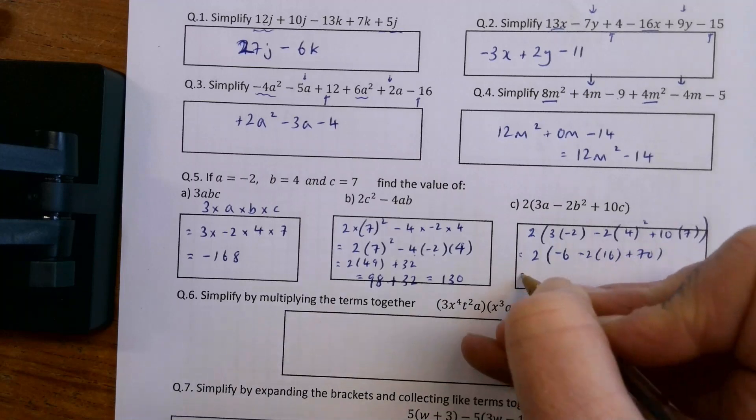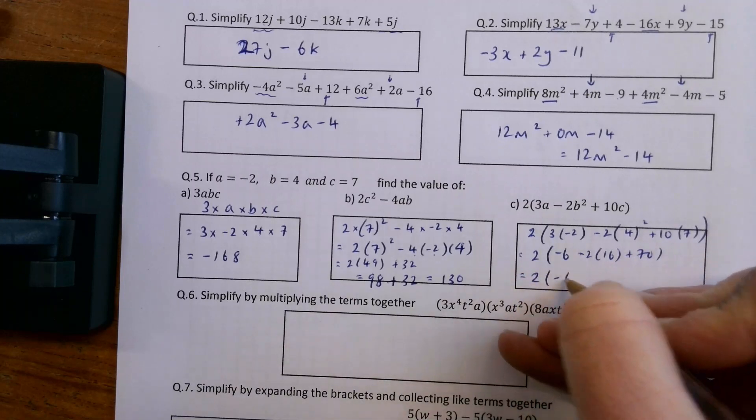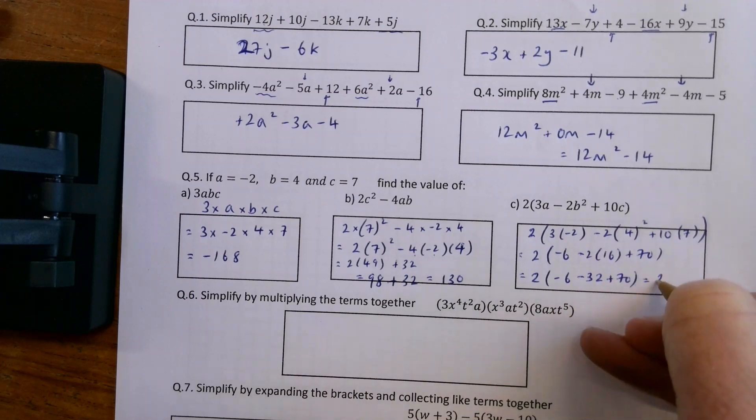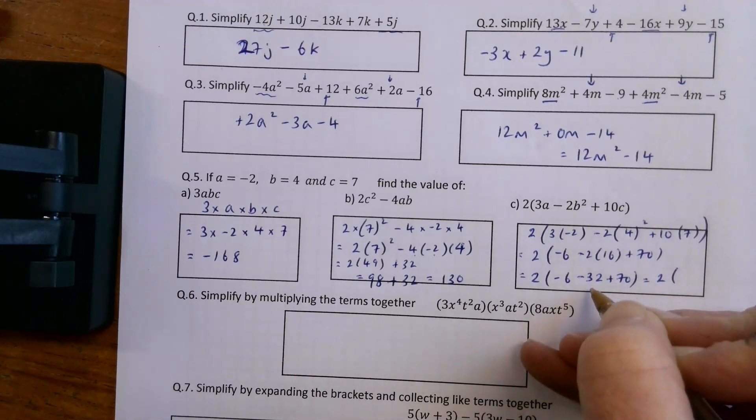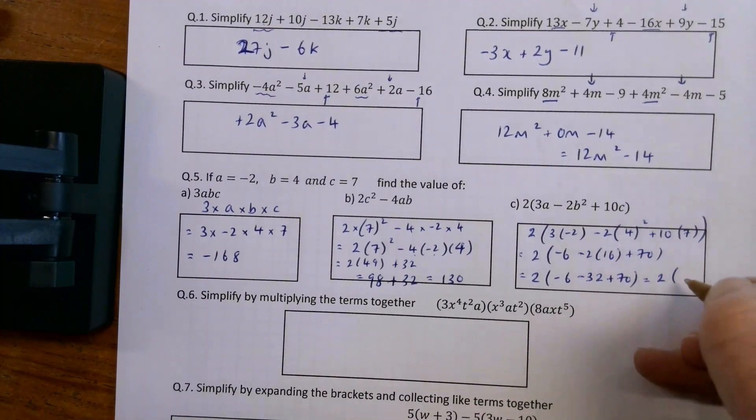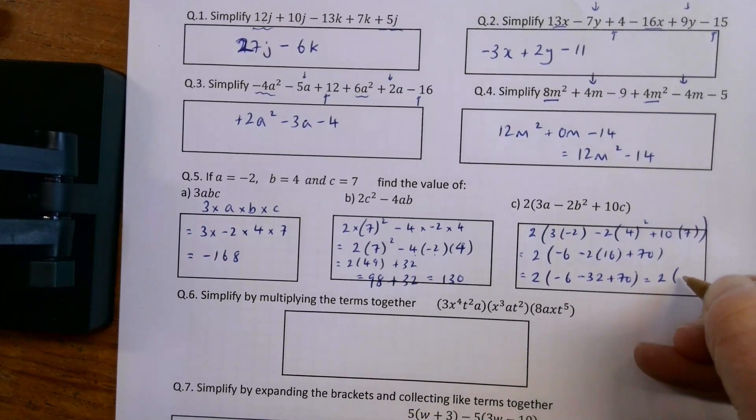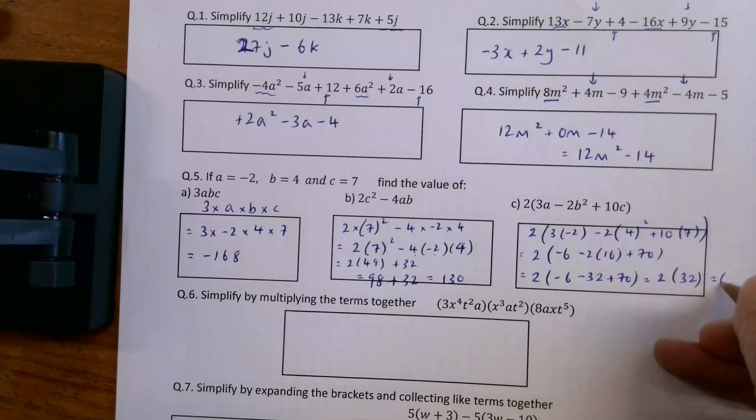So 2 times minus 6, minus 32, plus 70. So that's 2 times minus 38, plus 70, will be 32. So 2 times 32, which is 64.